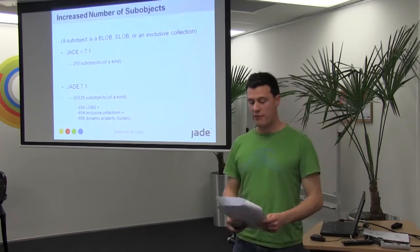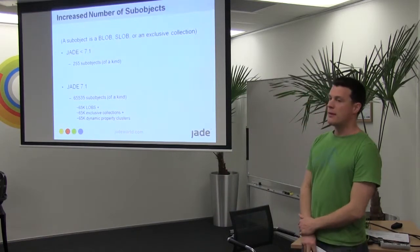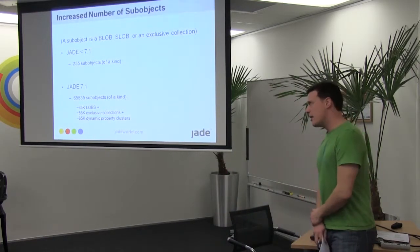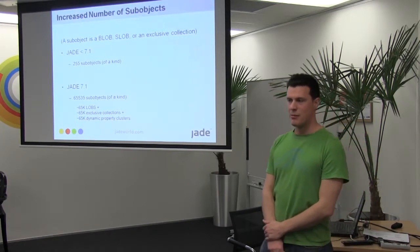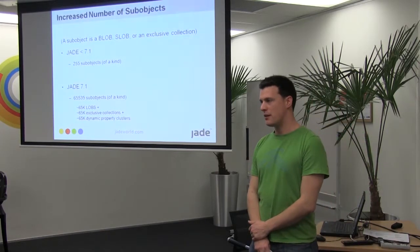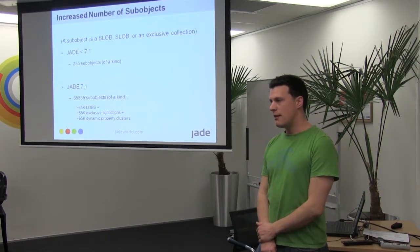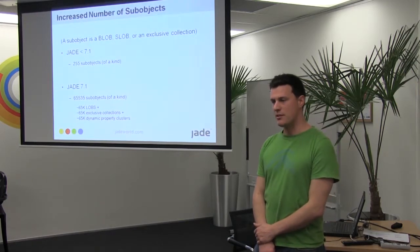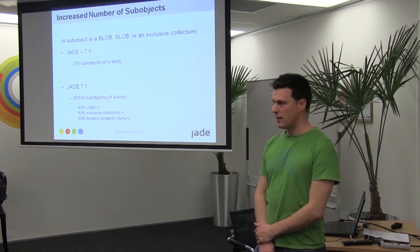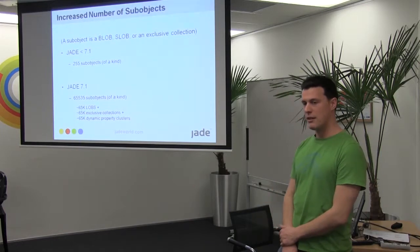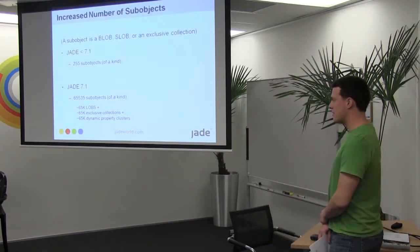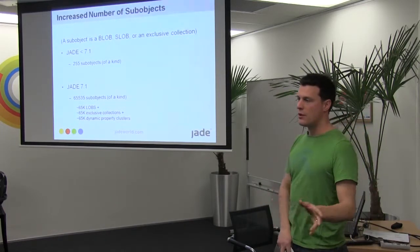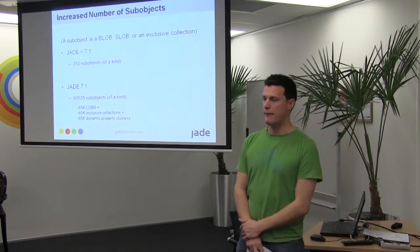We've also increased the number of sub-objects that you can have. You can now have about 65,000 sub-objects on any object — that's 65,000 blobs and slobs, plus 65,000 exclusive collections, and 65,000 dynamic property clusters, which you'll hear more about later.